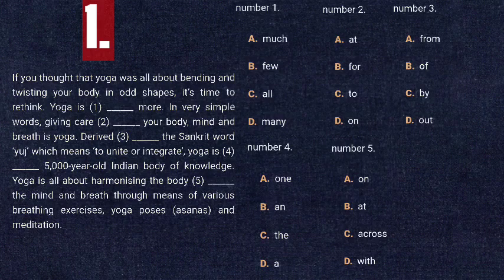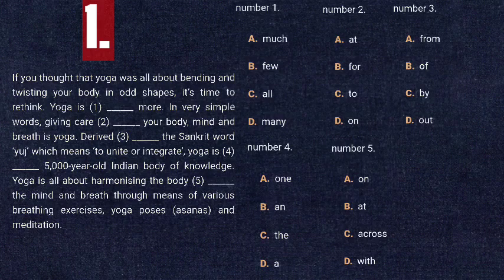For blank number four — 'yoga is [blank] 5000-year-old Indian body of knowledge' — it indicates an unspecific time period. 'The' is used before a specific object; 'and' doesn't fit. 'A' is correct because it indicates an unspecific reference. So the correct answer is: 'yoga is a 5000-year-old Indian body of knowledge.'